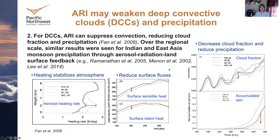ARI is also seen to suppress convection, reduce cloud fraction, and precipitation in our case study. The heating stabilizes the atmosphere and also reduces the surface sensible and latent heat fluxes. These kinds of results are also seen over polluted regions, for example in India and East Asia.